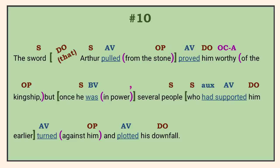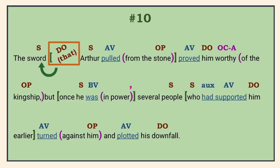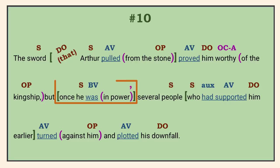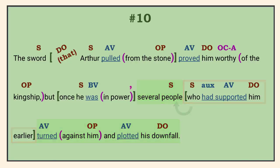Number 10. The first independent clause is 'the sword proved him worthy.' 'Worthy' is the object complement adjective because it describes the direct object, 'him.' Interrupting this clause is another subject-verb combination: Arthur pulled from the stone. Since there isn't a conjunction or punctuation joining this clause with an independent one, we check for an implied relative pronoun. 'That' stands in for 'sword' and begins a relative clause that tells what kind of sword — restricting the potential group of swords to a specific one, not just any sword in Britain — so no commas. Then we have the coordinating conjunction 'but' with a comma to join the two independent clauses. 'Once he was in power' is an adverbial clause starting with the subordinating conjunction 'once,' so we need a comma after it. 'People,' the subject of 'turned' and 'plotted,' is modified by a restrictive relative clause identifying which specific people supported him — therefore, no commas around it.